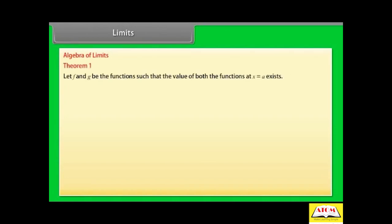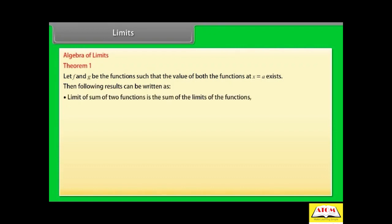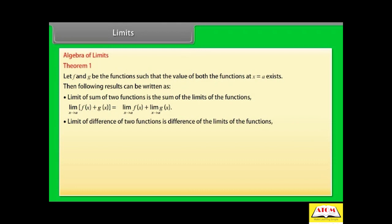Algebra of limits. Let f and g be functions such that the limits of both functions at x = a exist. Then the following results hold. The limit of the sum of two functions is the sum of the limits: limit x→a of [f(x) + g(x)] = limit x→a of f(x) + limit x→a of g(x). The limit of the difference of two functions is the difference of the limits: limit x→a of [f(x) - g(x)] = limit x→a of f(x) - limit x→a of g(x).